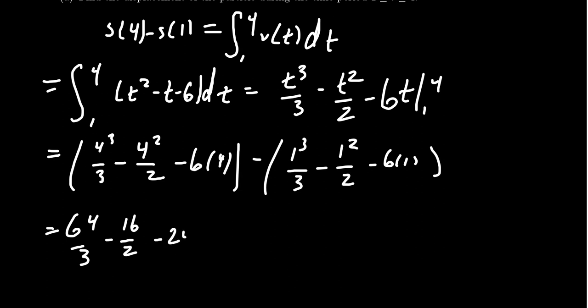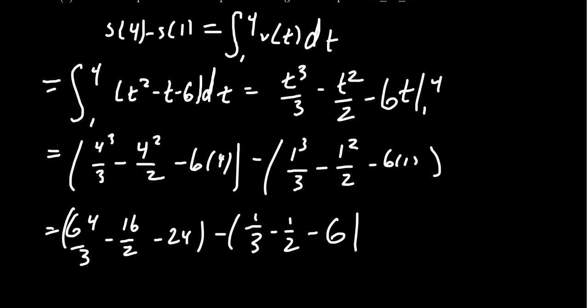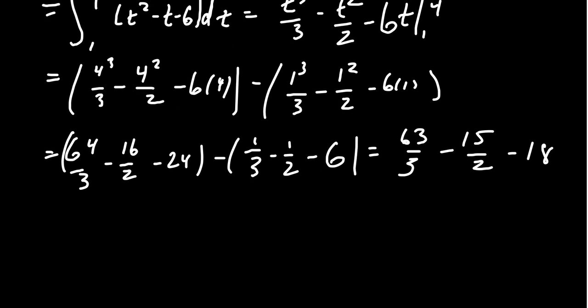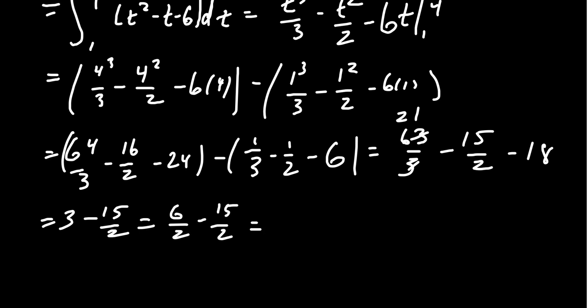Simplifying: 4³ is 64, 4² is 16 giving 16/2 = 8, and 6×4 = 24. For the second group we get 1/3, 1/2, and 6. Combining like terms: 64/3 minus 1/3 gives 63/3 = 21; negative 16/2 plus 1/2 gives negative 15/2; and negative 24 plus 6 gives negative 18. Then 21 minus 18 gives 3, and 3 minus 15/2 becomes 6/2 minus 15/2, which gives negative 9/2.